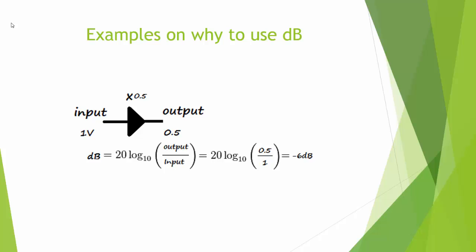As an example, if we have an amplifier where the input is 1 volt and the output is half a volt, the gain is half. In dB, the ratio of output to input voltage is 20 log of output over input, which is 20 log of 0.5 over 1. When you use a calculator, it gives you minus 6 dB.